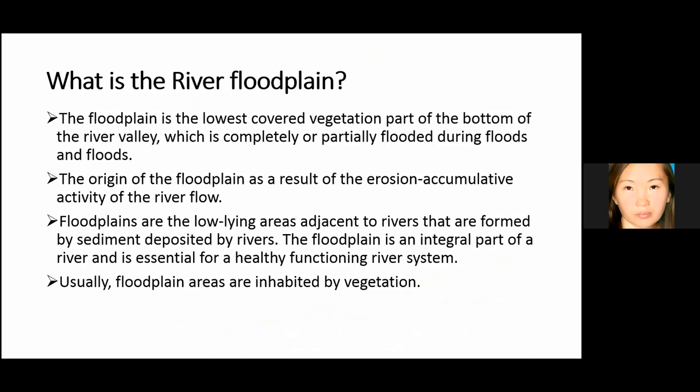These banks form over time and become established at a height that confines the river to its channel. When stream flow increases to the point where its elevation exceeds the channel banks, the water goes onto the floodplain areas. These areas are lowlands covered by vegetation and are partly or completely flooded during flood events.